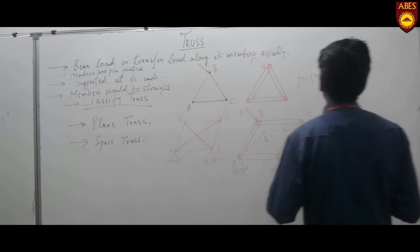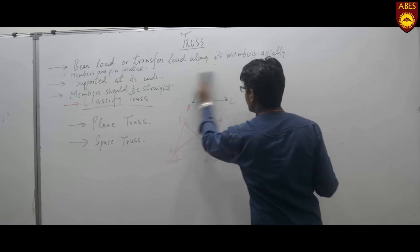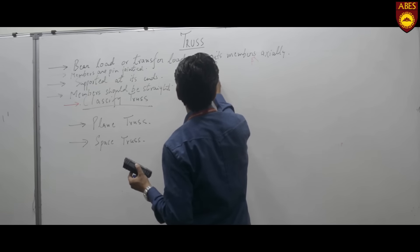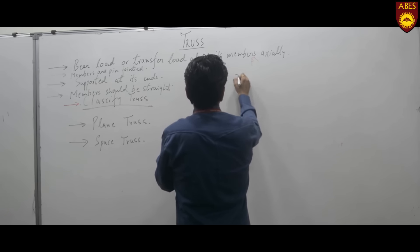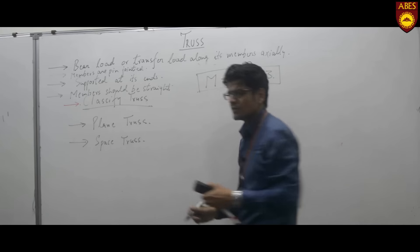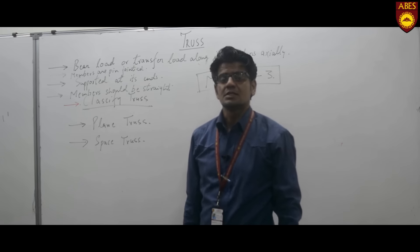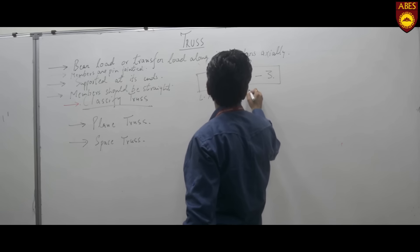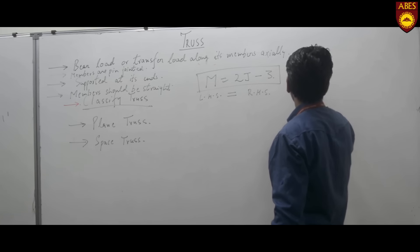For this classification, we can apply a simple formula which defines the relationship between members and joints. The simplest formula for identifying the perfectness of a truss is: m equals 2j minus 3. If the left-hand side equals the right-hand side, then the truss is said to be a perfect truss.